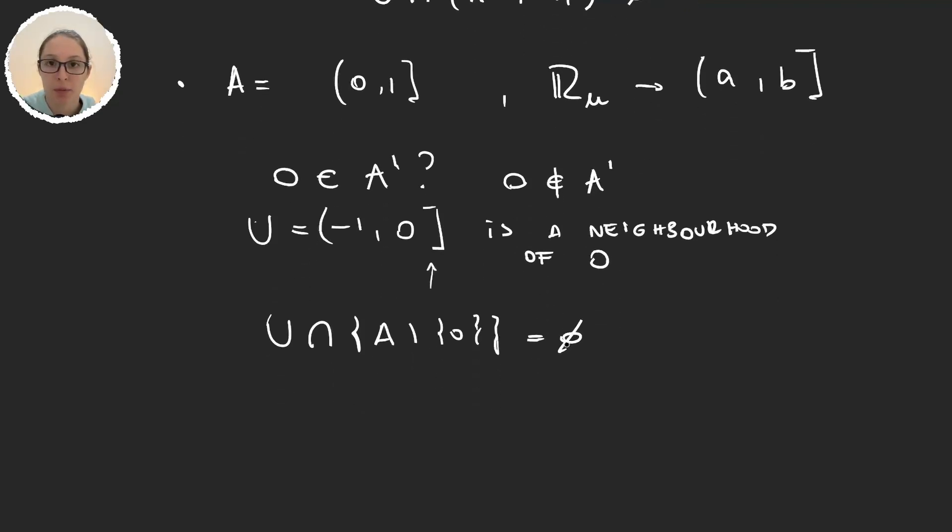Well what happens, and I'm leaving this one as an exercise, what happens with 1? Is 1 a limit point of A? And is 1 a limit point of A on ℝ_l? That is the lower limit topology, remember, generated by these intervals [a,b). What happens in this situation?